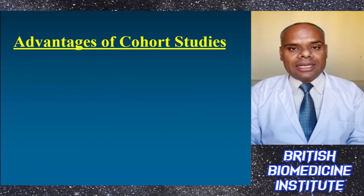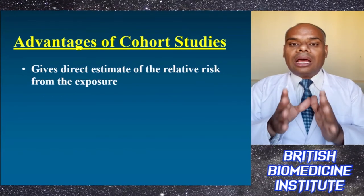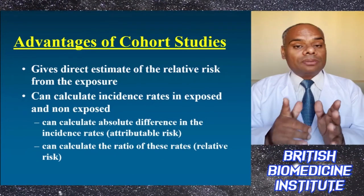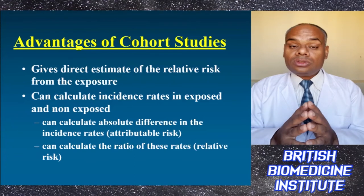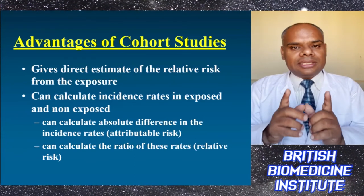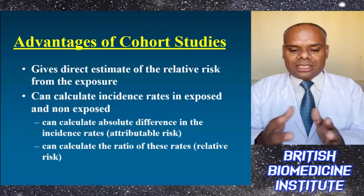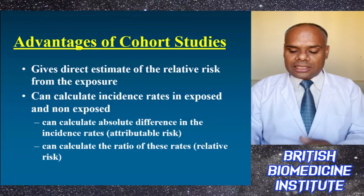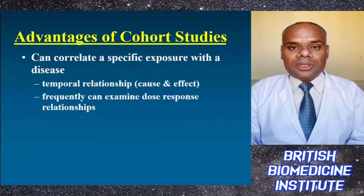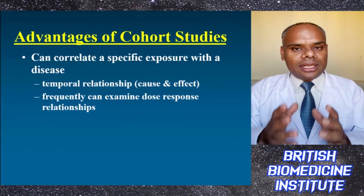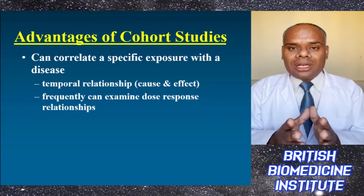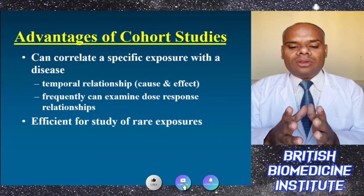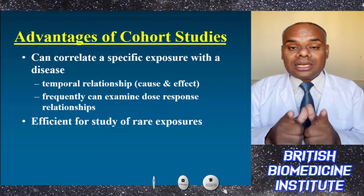The main advantages of cohort studies are that they give a direct estimate of relative risk from the exposure. We can calculate the incidence rate in exposed and non-exposed patients, calculate the absolute difference between incidence rates as attributable risk, and calculate the ratio of these rates as relative risk. We can correlate a specific exposure with a disease, establishing a temporal relationship between cause and effect, examine dose-response relationships, and the design is efficient for rare exposures.